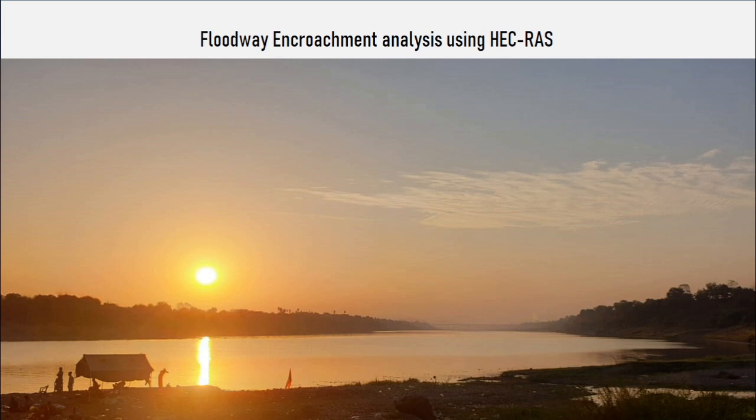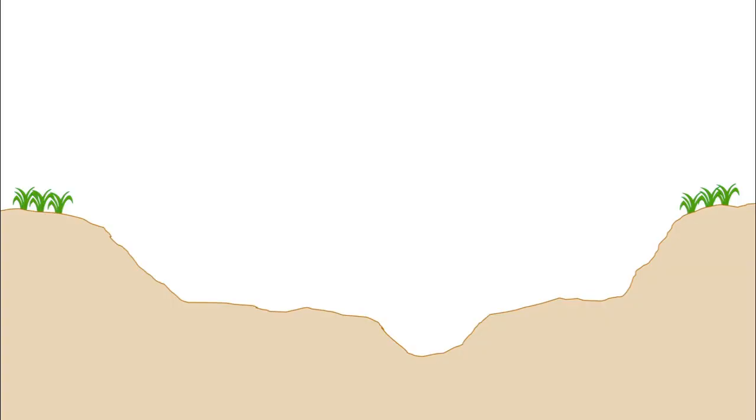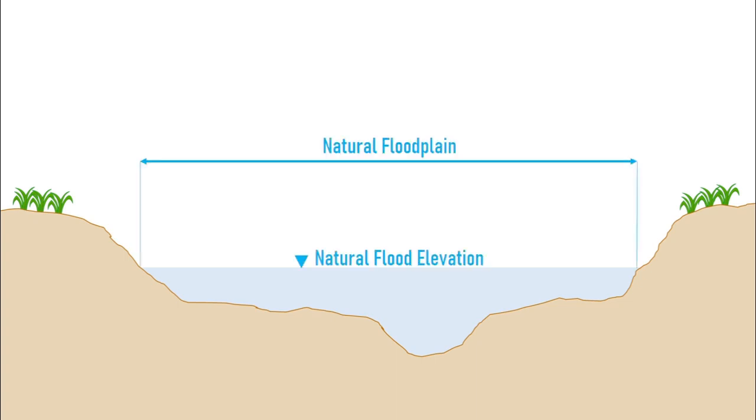Before we start with HEC-RAS, it's important to establish some key terms and concepts. Let's start with something very basic. What we are observing on the screen is a river cross section. For a given discharge through this cross section, a specific water elevation will be reached occupying a certain cross-sectional area. We can refer to this water elevation as the natural flood elevation and the corresponding area as the natural floodplain.